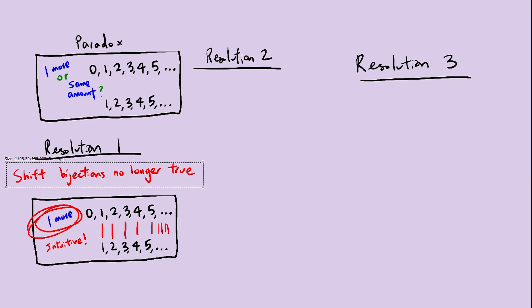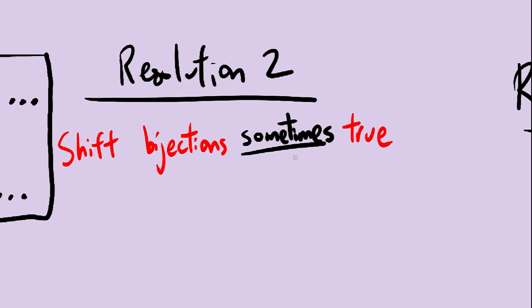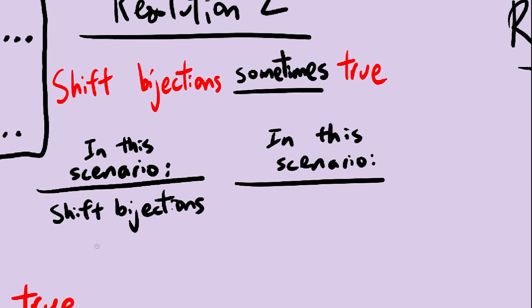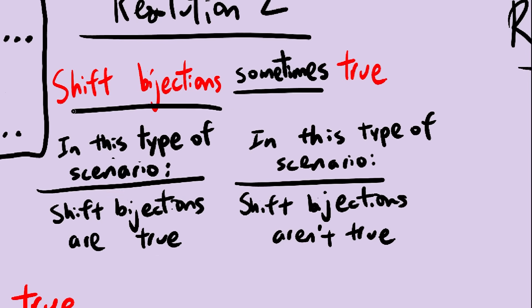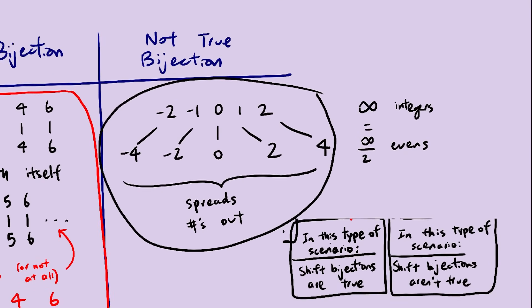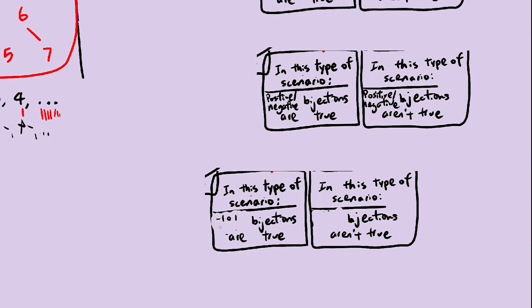The second resolution to this paradox is, sometimes shift bijections are true and sometimes they're not, and we would come up with some sort of criteria for determining this. We could also do the same for other types of bijections. For example, it might be the case that some scenarios would require this to be a true bijection, and we could have some sort of criteria for that as well.